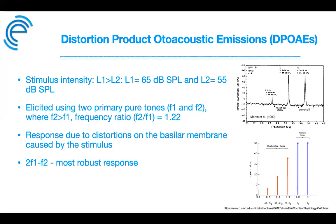In terms of L1 and L2 — the intensities of frequencies 1 and 2 — L1 is usually 65 dB SPL and L2 is 55 dB SPL. Having these moderate levels with a 10 to 15 dB difference has been shown in studies by Abdullah in 1996 and Brooke in 2001 to be optimal for separating ears with normal hearing from those with hearing loss of about 20 to 30 dB.